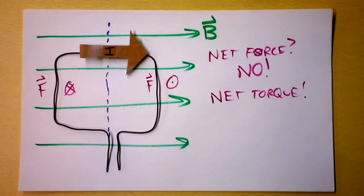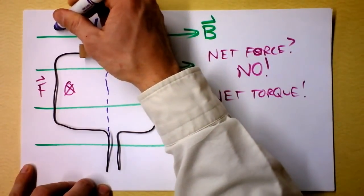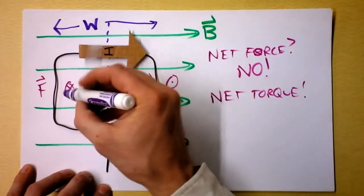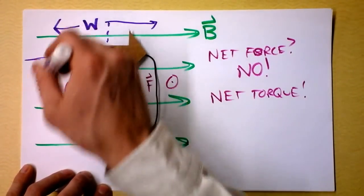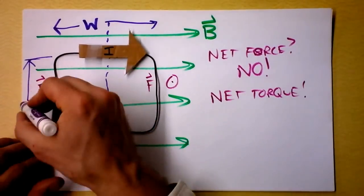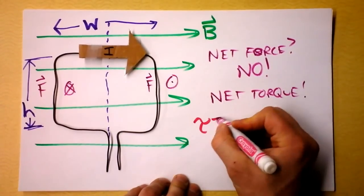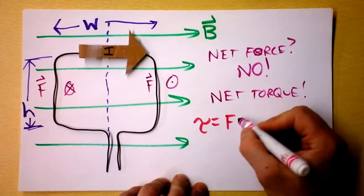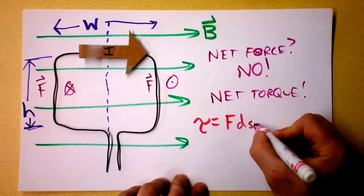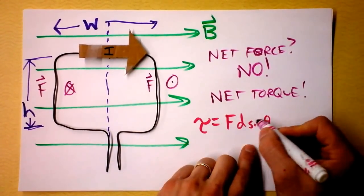I'm going to put an axis right here that it can rotate about, and we want to figure out how much that torque is. I'll define some quantities. The width of my loop is W, going from there to there. And I'll define H — the height of my loop — which is the length of the wire that's feeling the force, going into the BIL equation. I know an equation for torque: torque is force times distance times the sine of the angle between the force and the distance. We've already taken care of the sine.